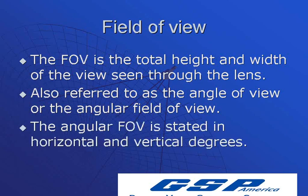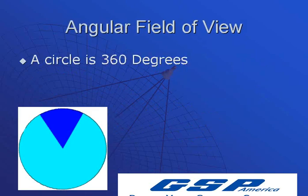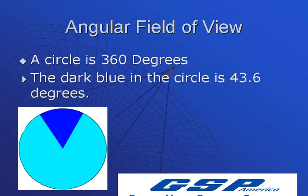When you talk about the angular field of view, it's stated in horizontal and/or vertical degrees — degrees of a circle. A circle is 360 degrees. So what is my degree of view? In this case, the dark blue in that circle is 43.6 degrees. So my angle of view is 43.6 degrees — that's how wide, or that's what I can actually see. Imagine this is your eye or the camera in the center of a circle, and this is the total angle of view the camera is able to see.